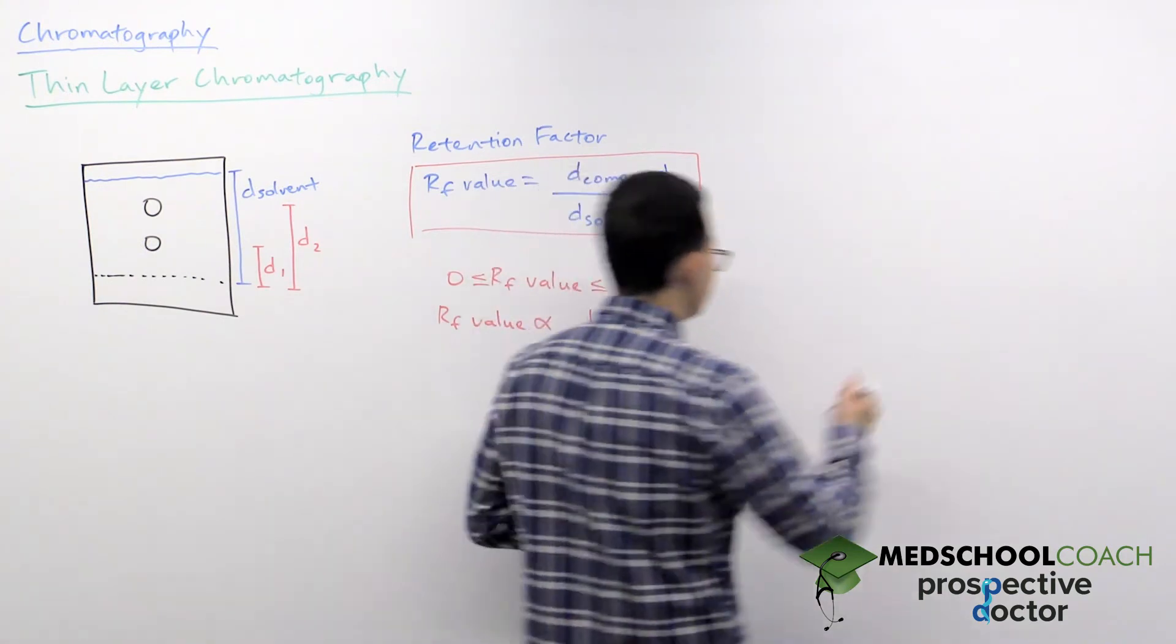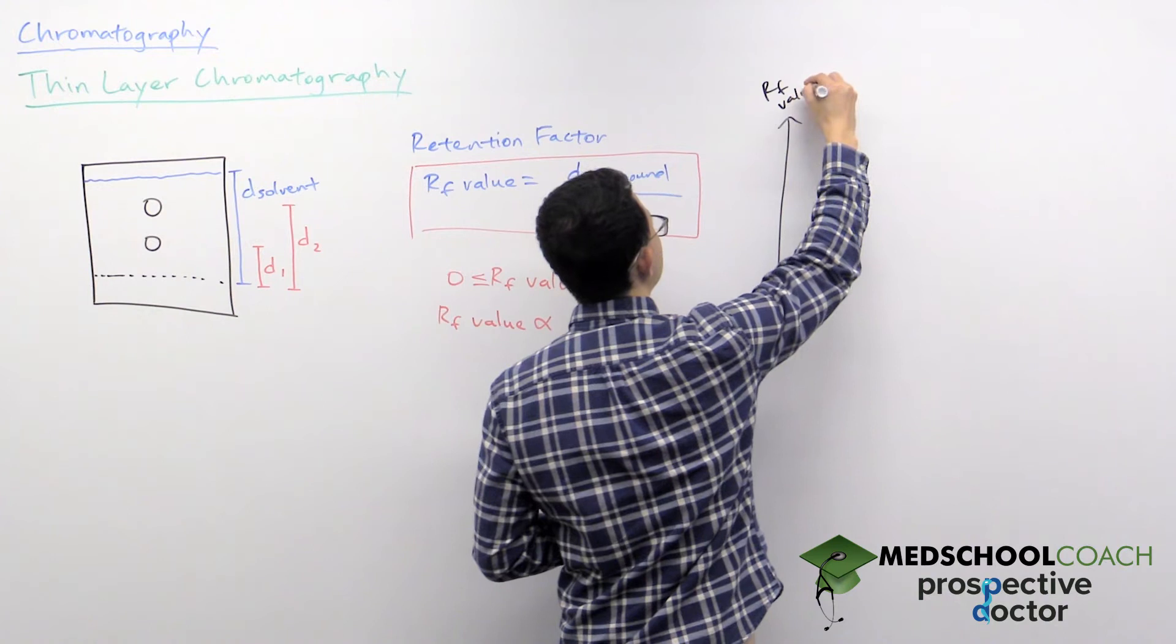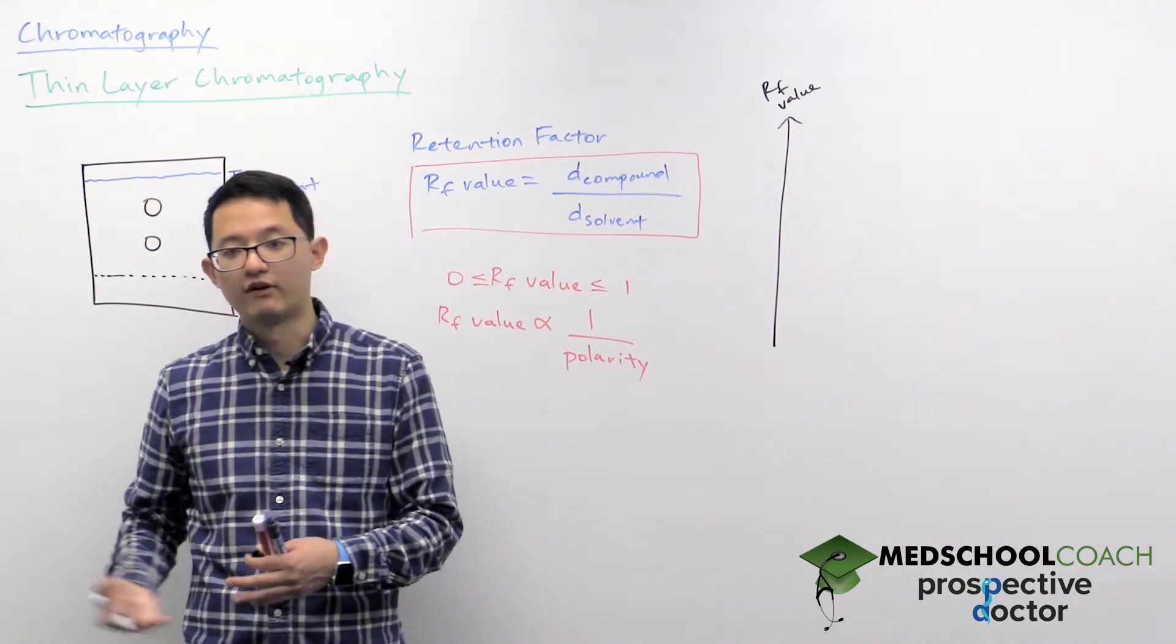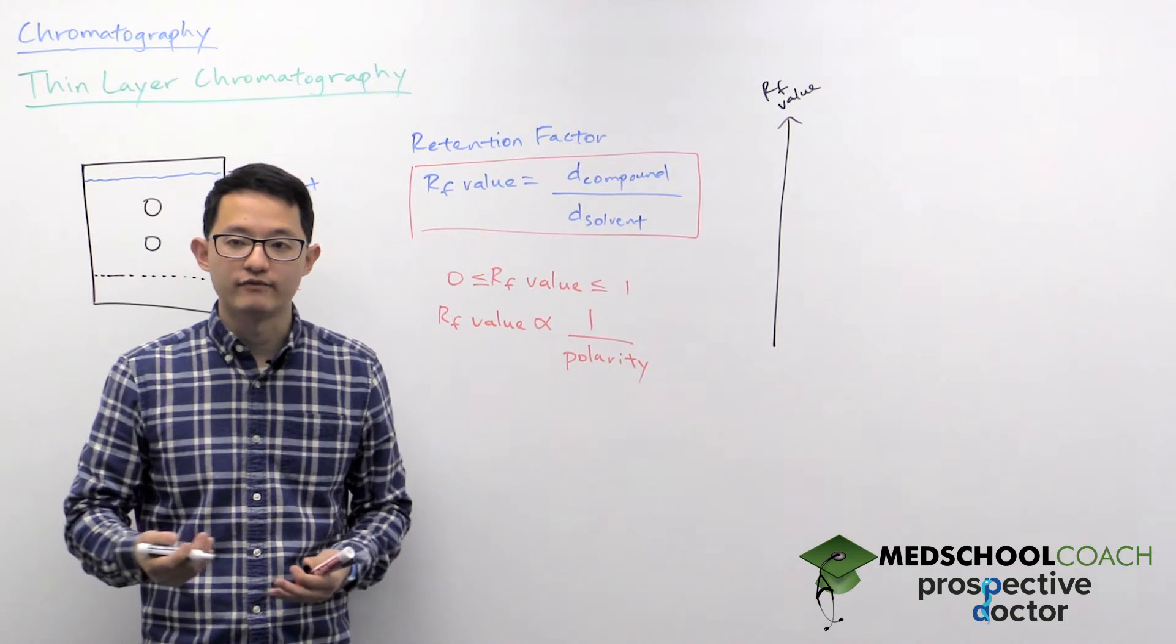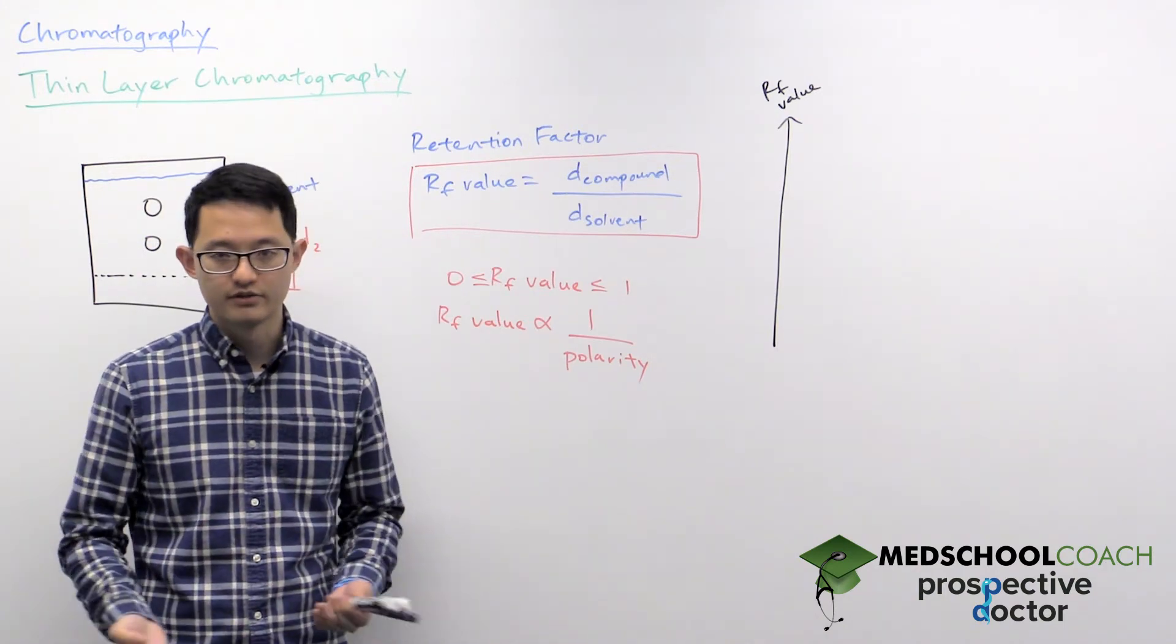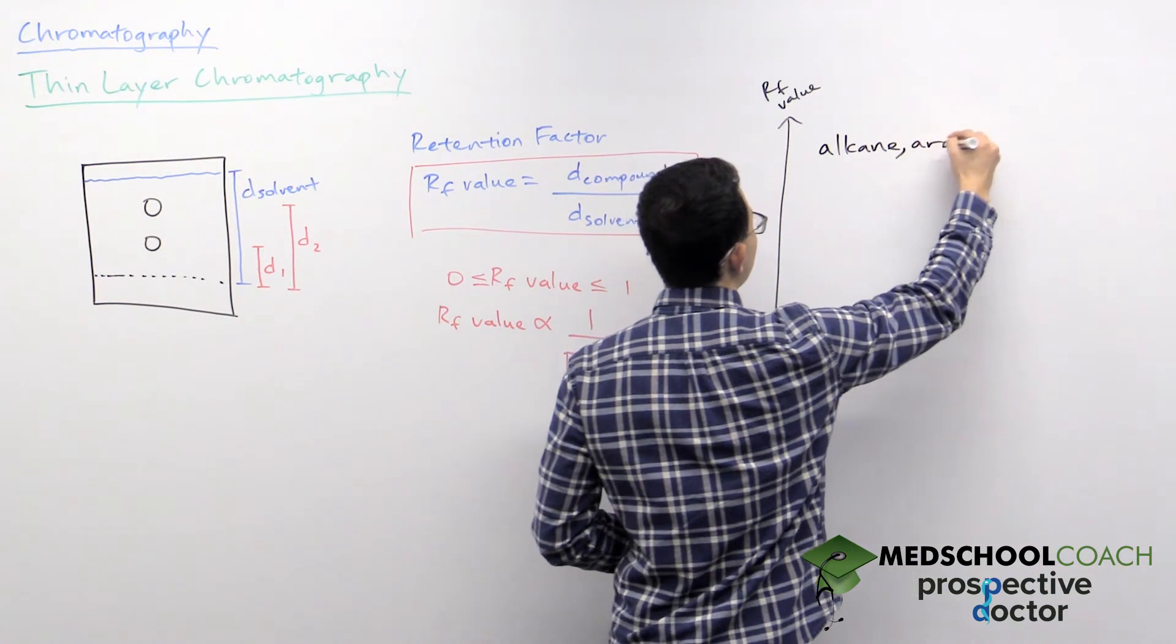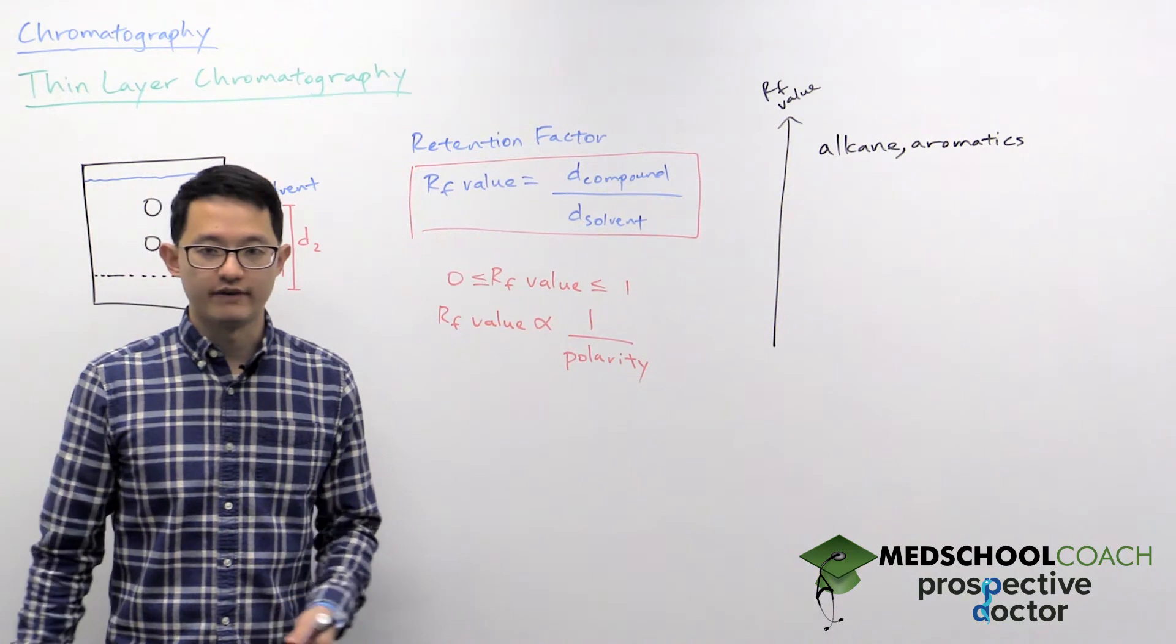And we can do a ranking of some of the more common functional groups that you can see in compounds to be able to recognize in general which ones would have larger versus smaller RF values. So we're looking at the top—compounds with high RF values—these would be compounds that are not very polar, so nonpolar compounds. So you can be thinking about alkanes as well as aromatic compounds. So not very polar, very high RF values.